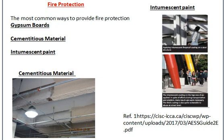Gypsum boards are used when we have a residential building or office building. In these buildings there are partitions and ceilings, and you can utilize gypsum board around the steel structure or steel members to provide fire protection. The thickness of the gypsum board around these members will determine the fire rating or fire resistance of the structure.